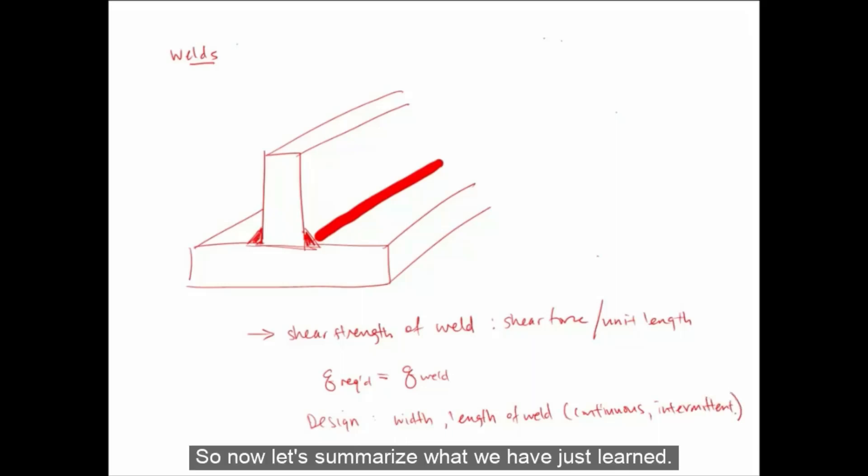So now let's summarize what we have just learned. For a built-up member to display composite action, shear stress has to be transferred between components. We can express the longitudinal shear stress as a force per unit length and call it shear flow. So the way we determine the variables in shear flow, V, Q and I, the internal shear force, Q, and the moment of inertia, are identical to how we determine them for the transverse shear.